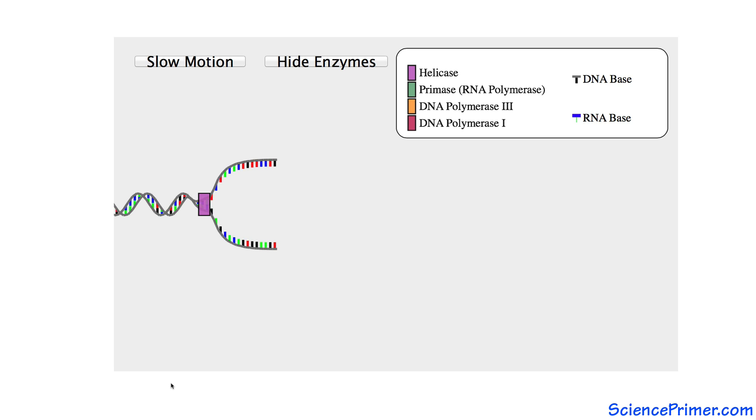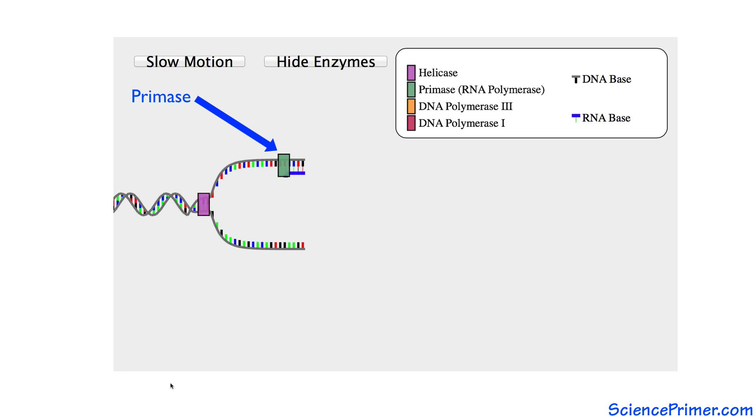For replication to begin, another enzyme, primase, which is a type of RNA polymerase, must create short priming sequences before DNA polymerases can begin their work.